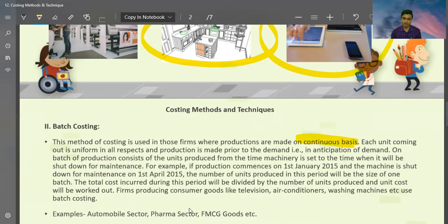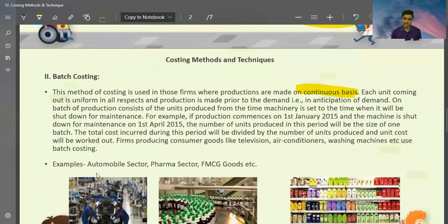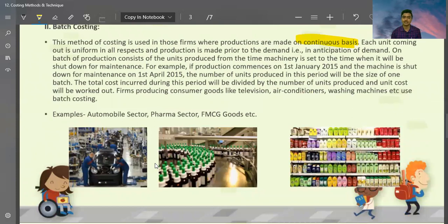The total cost incurred during this period will be divided by number of units produced and unit cost will be worked out. Firms producing consumer goods like television, air-conditioning, washing machine, use batch costing. For example, I have given another example. I have given a few pictures in which batch costing follows. You can see, all these products are always made in batch. You can see, all these batch numbers are always written. Cars are also manufactured in batch.